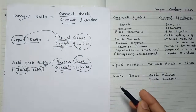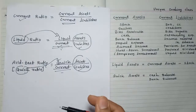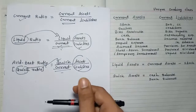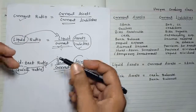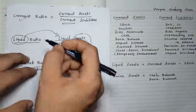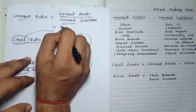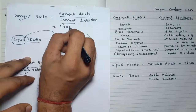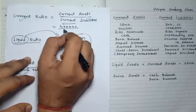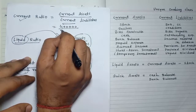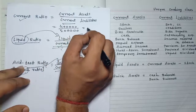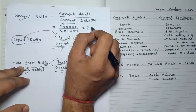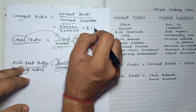Remember how to express the answer. The answer must be shown in ratio format. For example, if current assets are 4 lakh and current liabilities are 2 lakh, the answer is 2 — but we write it as 2:1.